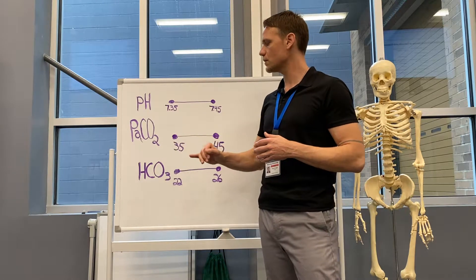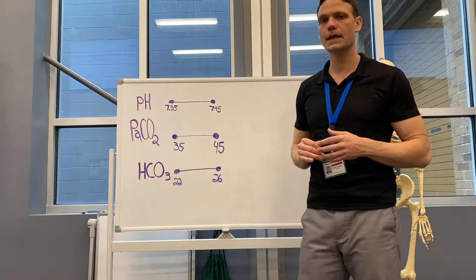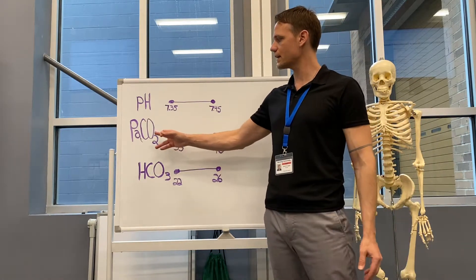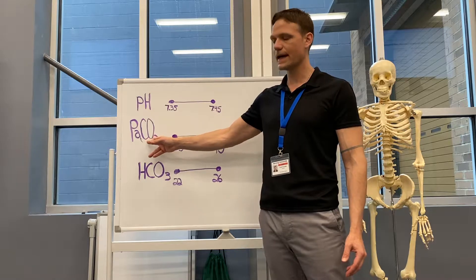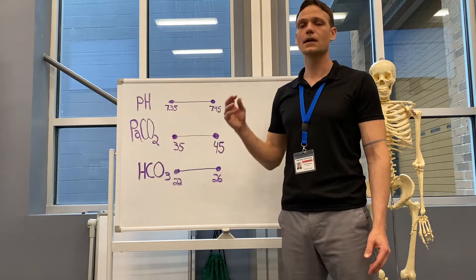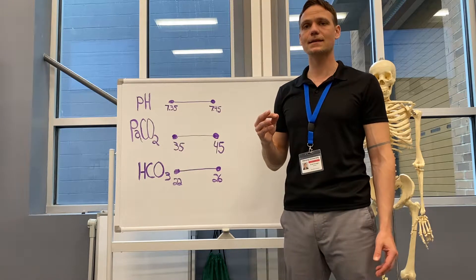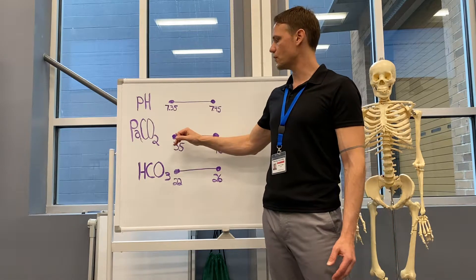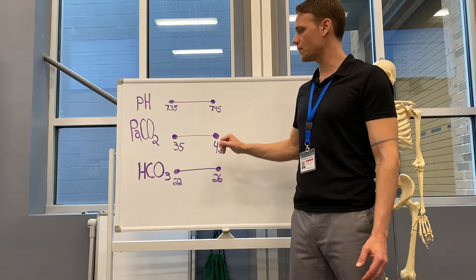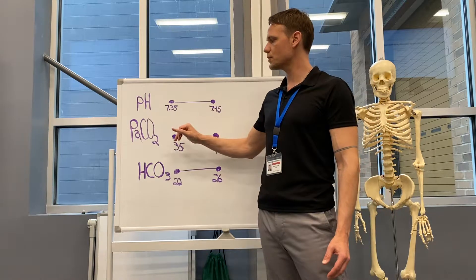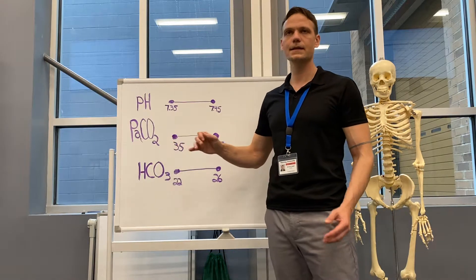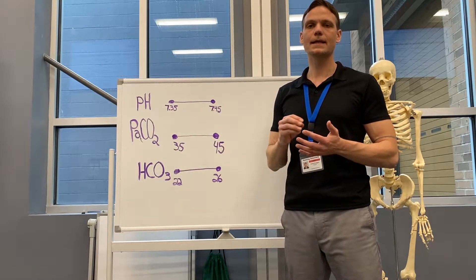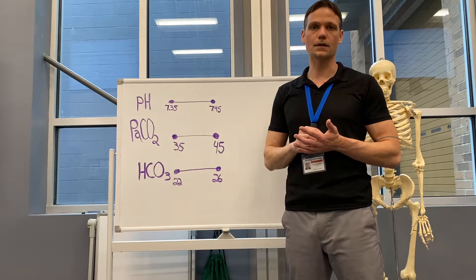The second thing we want to look at when interpreting ABGs is the PaCO2. It's important to recognize that we have the gas CO2 in this — carbon dioxide is considered an acid. The normal value is 35 to 45, and when there is an issue within this system, it is correlated with the lungs.